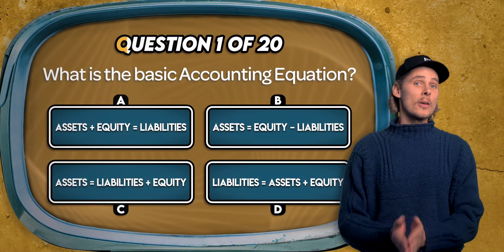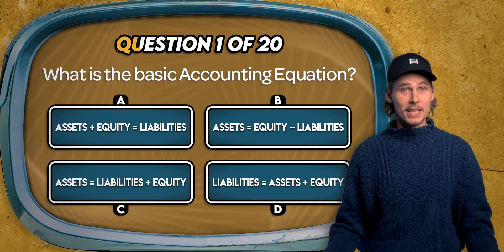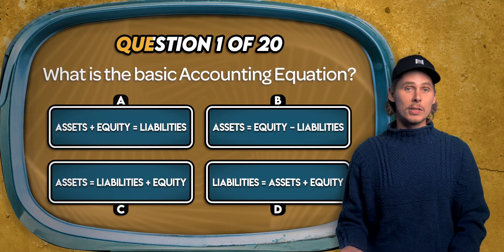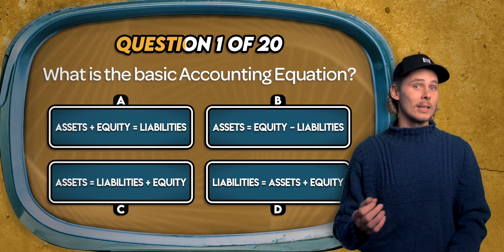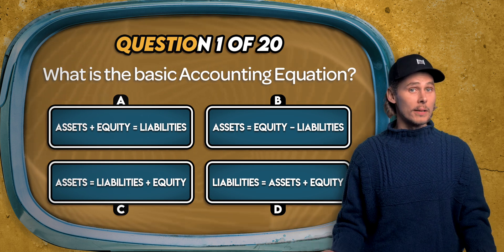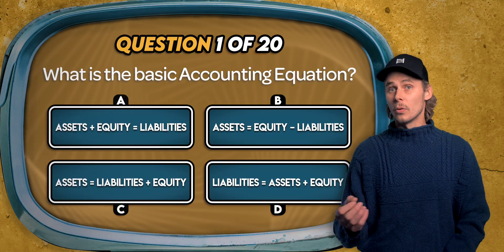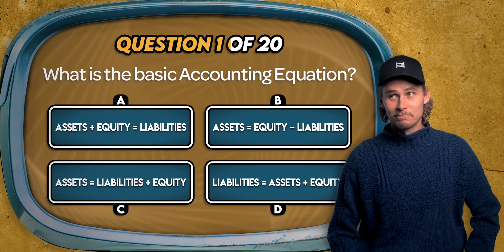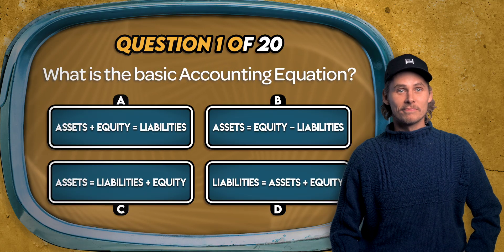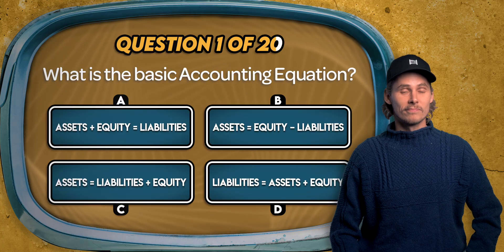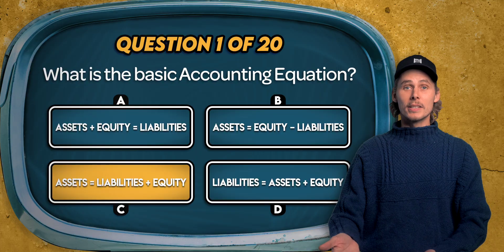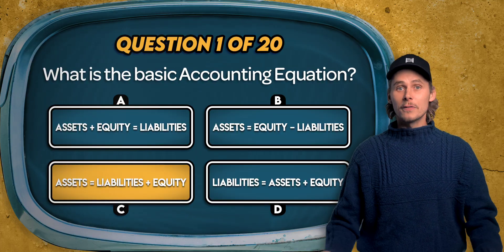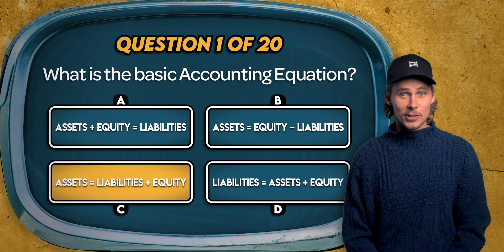Question 1. What is the basic accounting equation? Is it assets plus equity equal liabilities, assets equal equity minus liabilities, assets equal liabilities plus equity, or liabilities equal assets plus equity? The answer is C: assets equal liabilities plus equity. This formula is the foundation of the double entry accounting system.